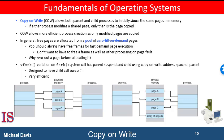Instead, we can use a technique known as copy-on-write, which works by allowing the parent and the child processes initially to share the same pages. These shared pages are marked as copy-on-write pages, meaning that if either process writes to a shared page, a copy of the shared page is created. Copy-on-write is shown in the figures below, which show the contents of the physical memory before and after process 1 modifies page C. Initially, process 1 and process 2 — the parent and the child — are sharing page C, but when one of the processes modifies page C, a copy is then made.